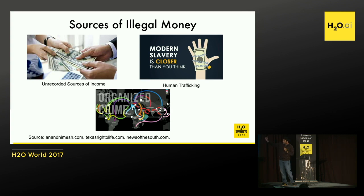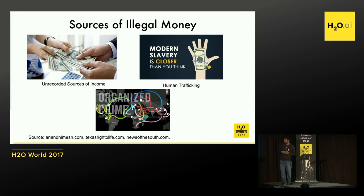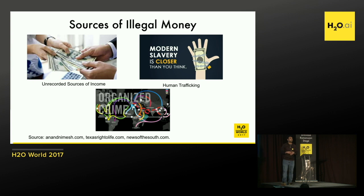Going back to unrecorded sources of income — I'm hoping a lot of people have seen the show Breaking Bad. The protagonist does it in a very nice way, where he actually has a car cleaning service and the drugs that he's actually selling get laundered through the car cleaning service. So that's one of the ways in which you legalize your bad money into the system.